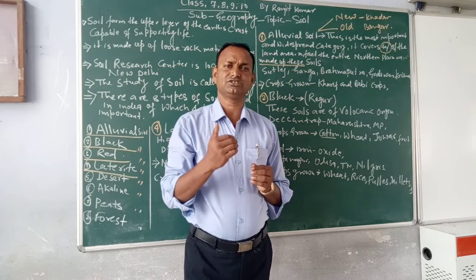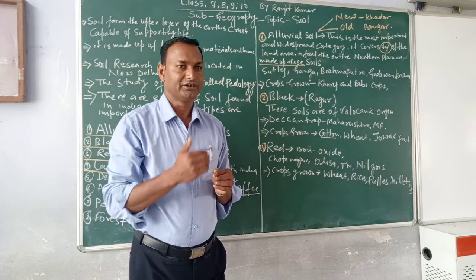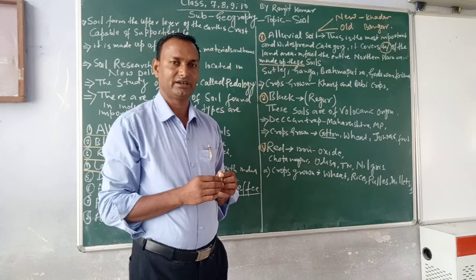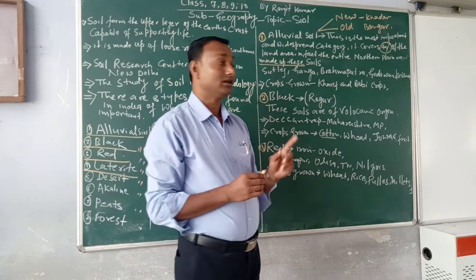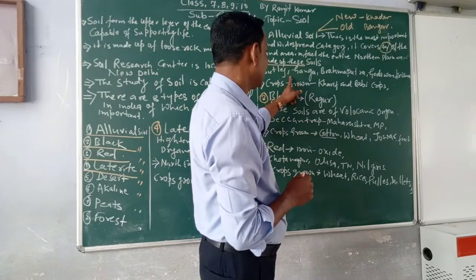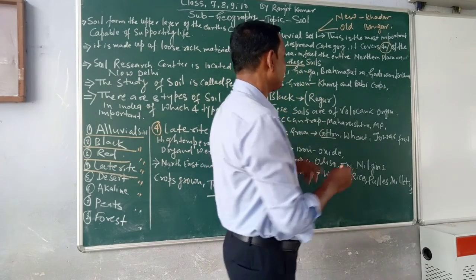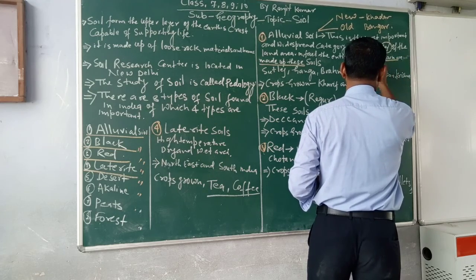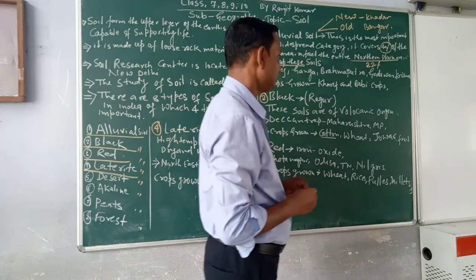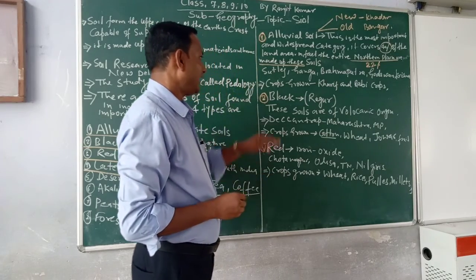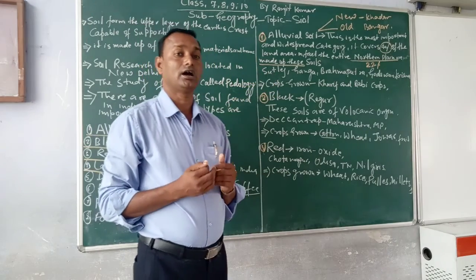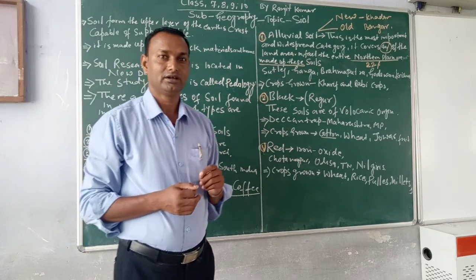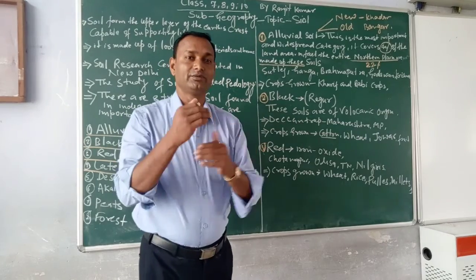In India, Alluvial soil is found mainly in the northern plains. It is deposited by the rivers Ganga, Brahmaputra, and other rivers of northern India, covering about 22% of that region. Rivers like Ganga, Brahmaputra, Krishna, Godavari, and Kaveri have all deposited alluvial soil in their basins.